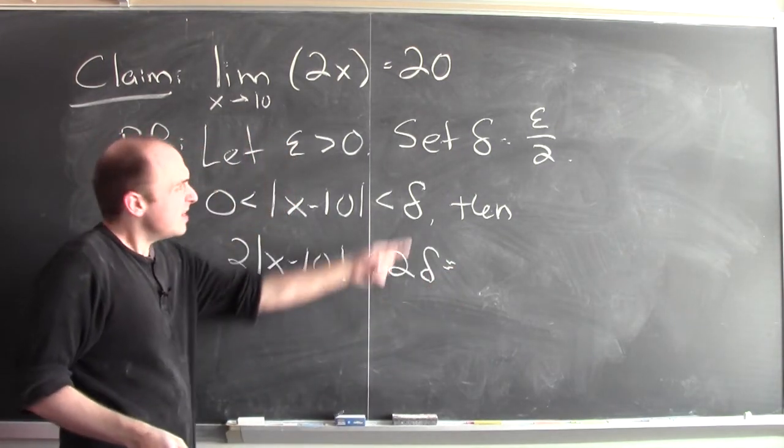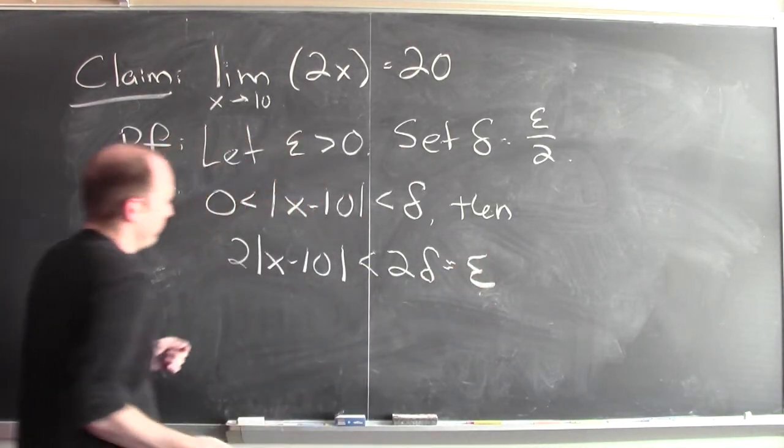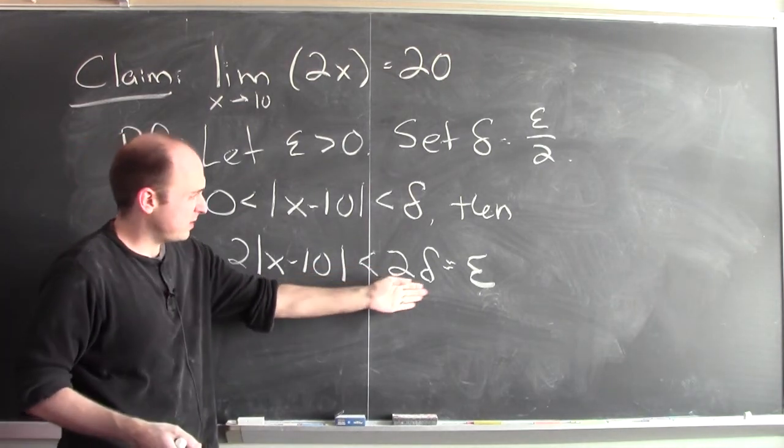But what's 2 delta? Delta is epsilon over 2. 2 delta is just epsilon. So then 2 times the absolute value of x minus 10 is less than 2 delta, which is epsilon.